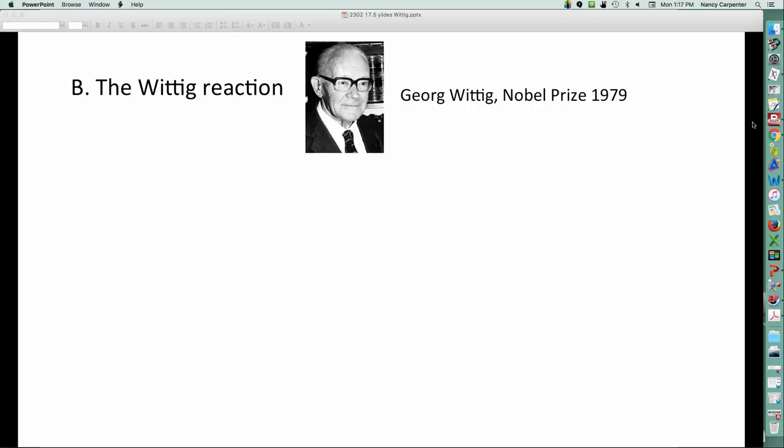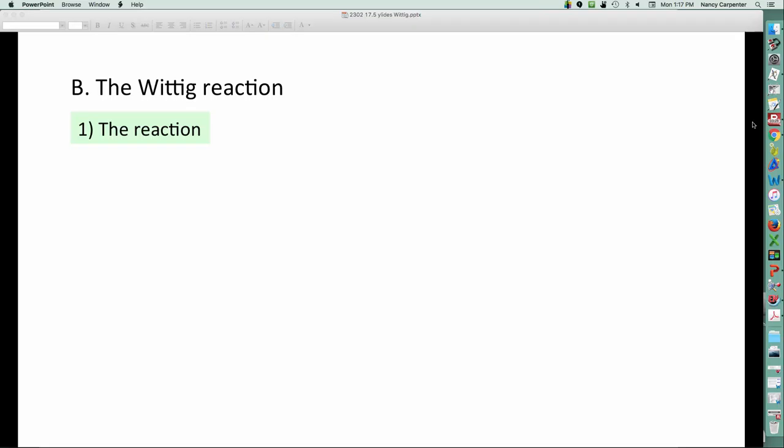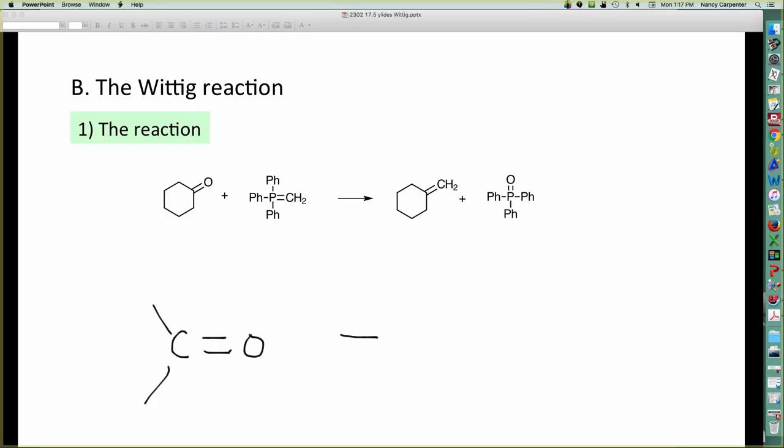All right, so Wittig, here he is, Georg Wittig, won the Nobel Prize for this chemistry. There's three parts to it. The first part we're going to look at is the reaction. The reaction itself is converting a carbonyl to an alkene. So it's kind of like the opposite of ozonolysis. Here I have a carbonyl. Here I have a Wittig. And it's as if I'm just going to put these two back together again. This is the piece that gets plunked on to the carbonyl. So right here, I have delivered that CH2 to the carbonyl, the ketone carbonyl. Pretty cool.